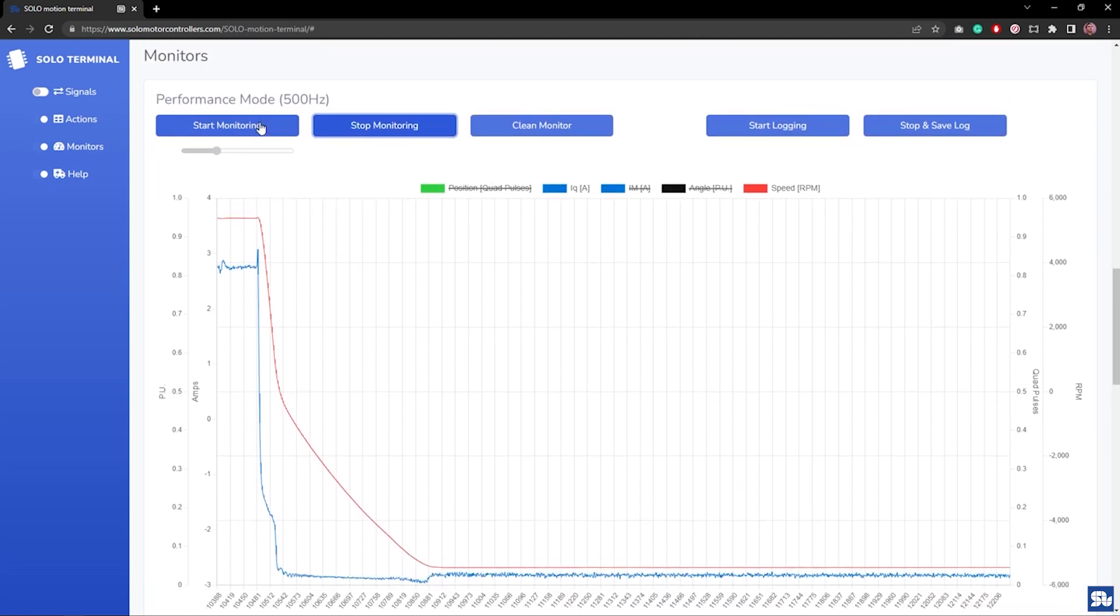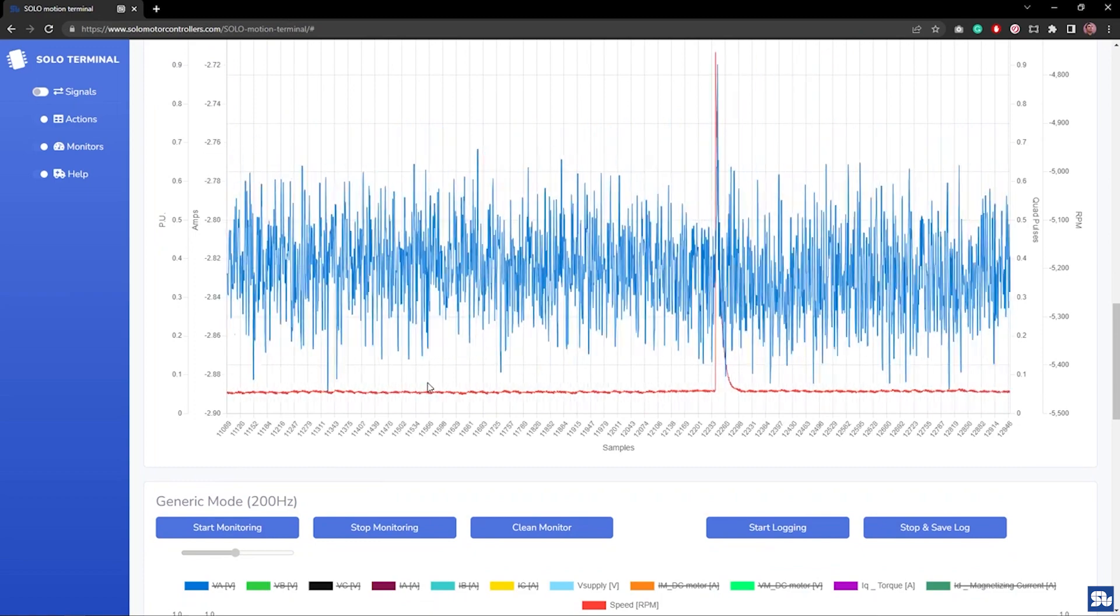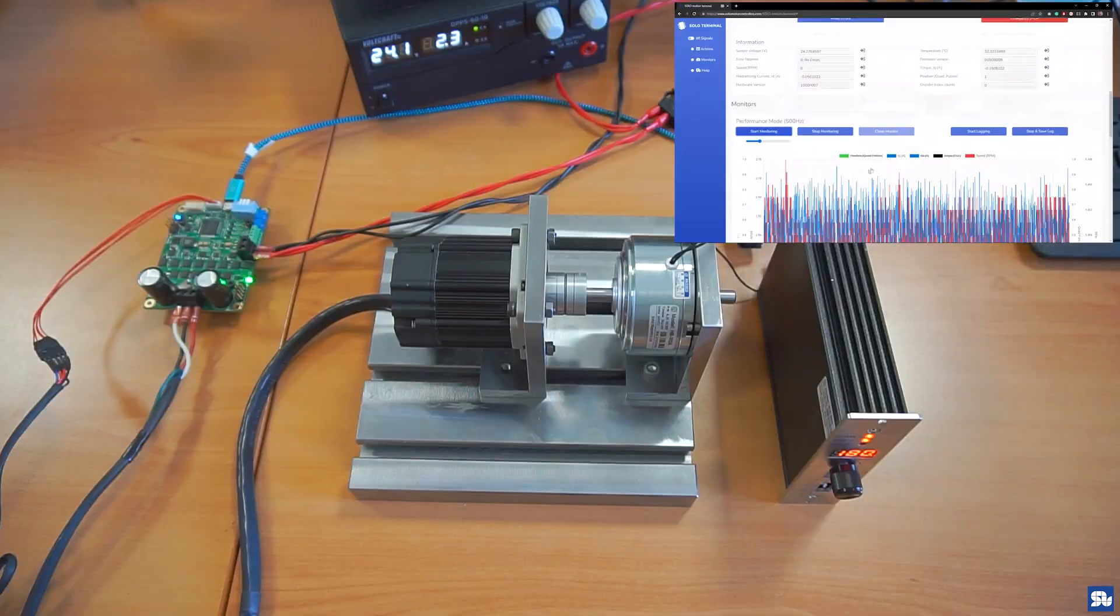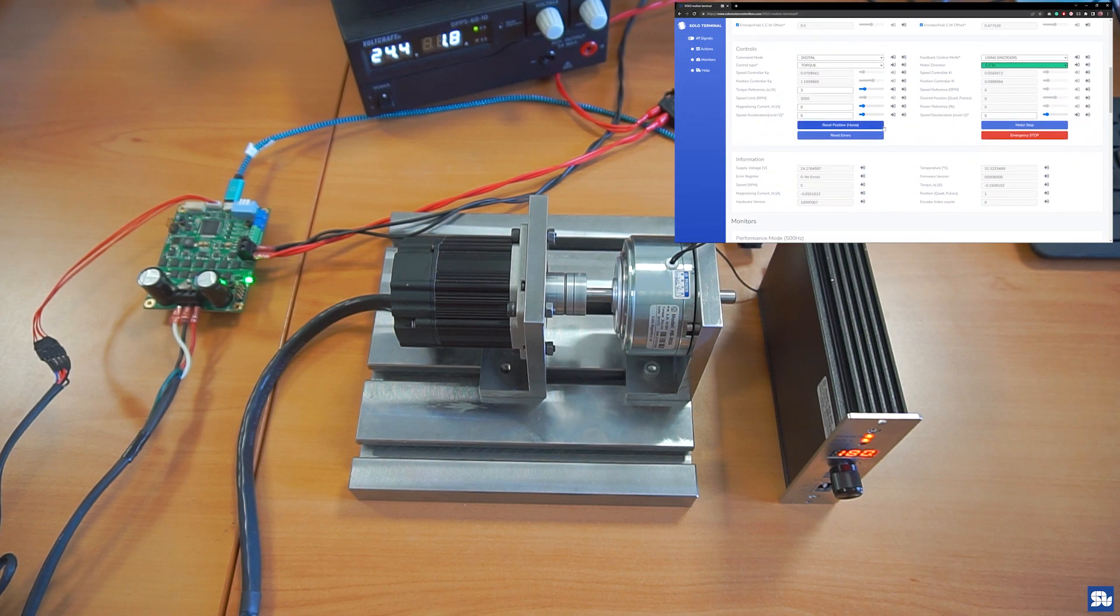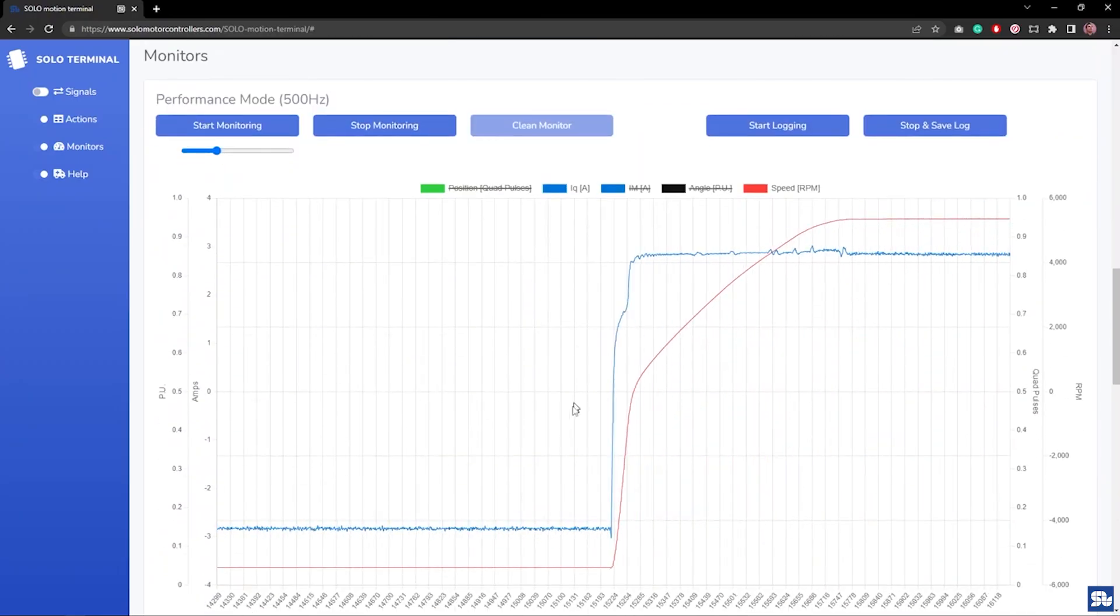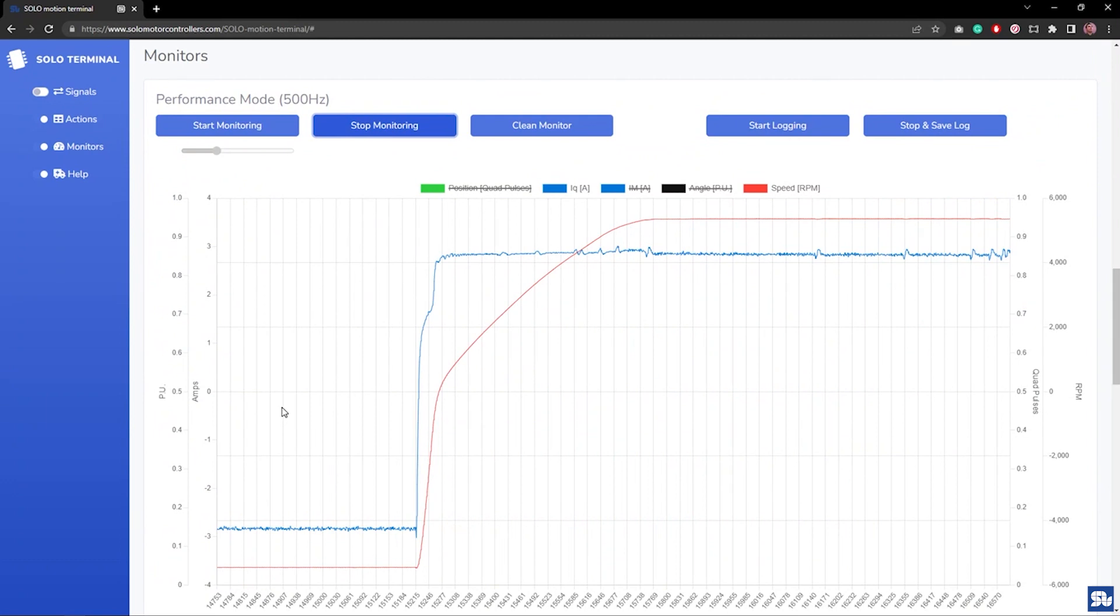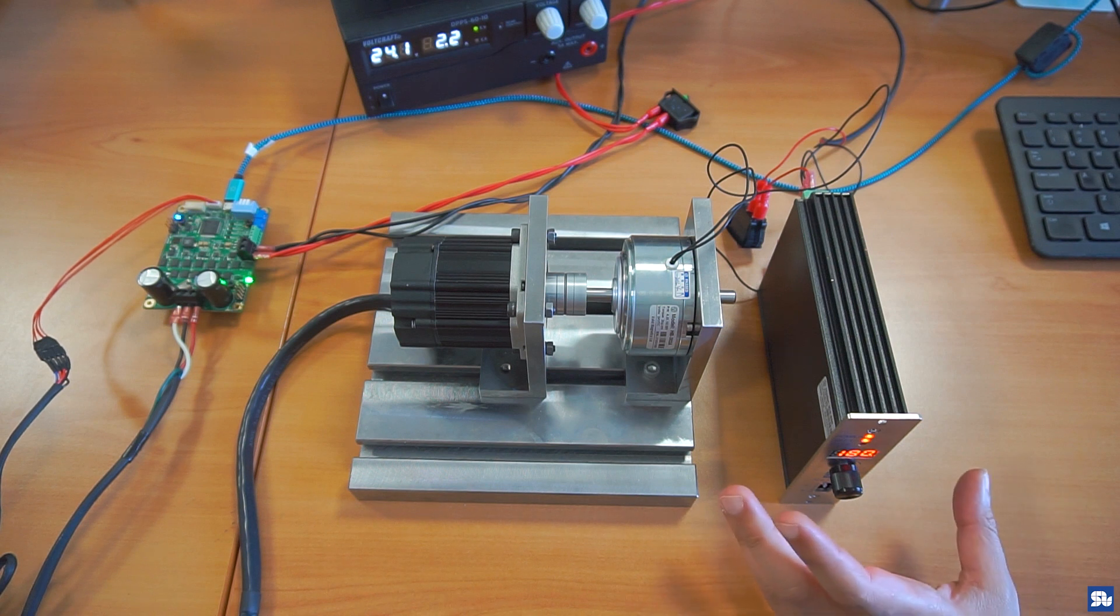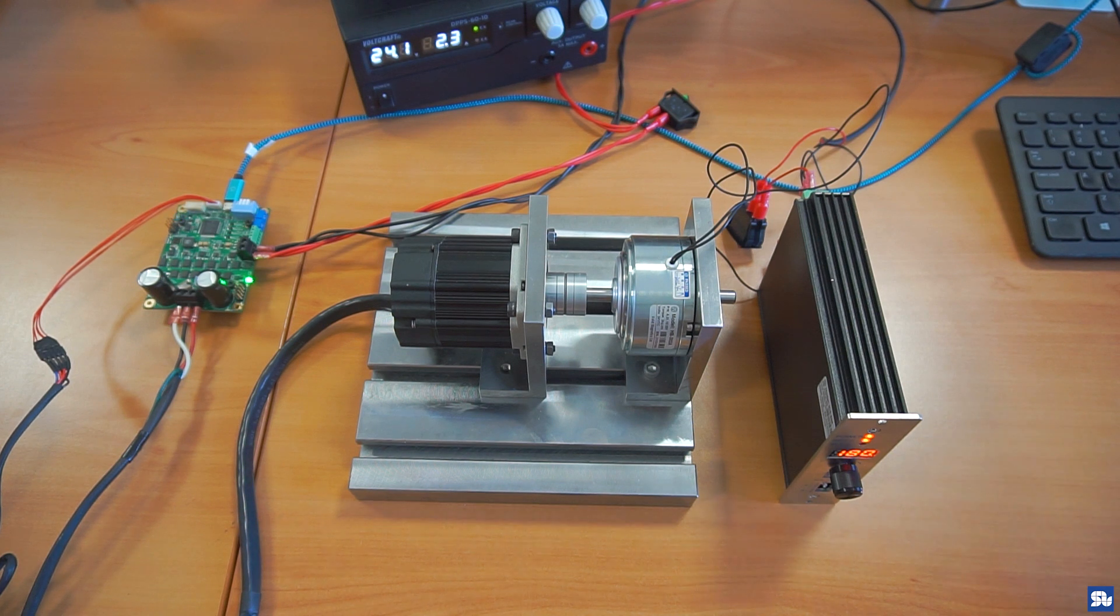You see here the nominal speed of the motor is actually a bit less because there is higher load on the shaft of the motor, but I can go to various conditions. I change the direction appropriately. You see again I go from one torque to the other. So that was the whole notion of torque controlling in Solo. I hope it was helpful. If you have any other questions, please visit our website, use our forum for your technical questions, and we remain available. Thank you so much.